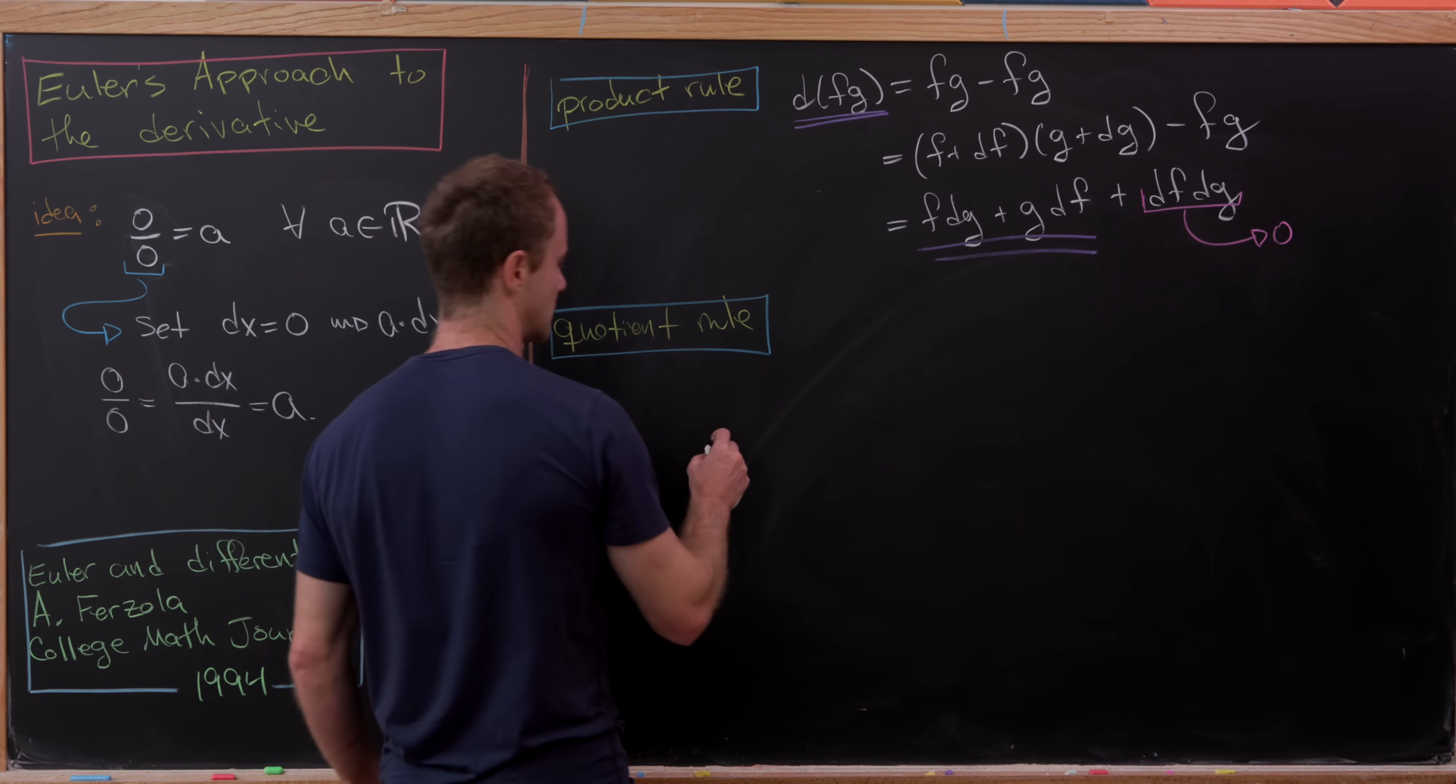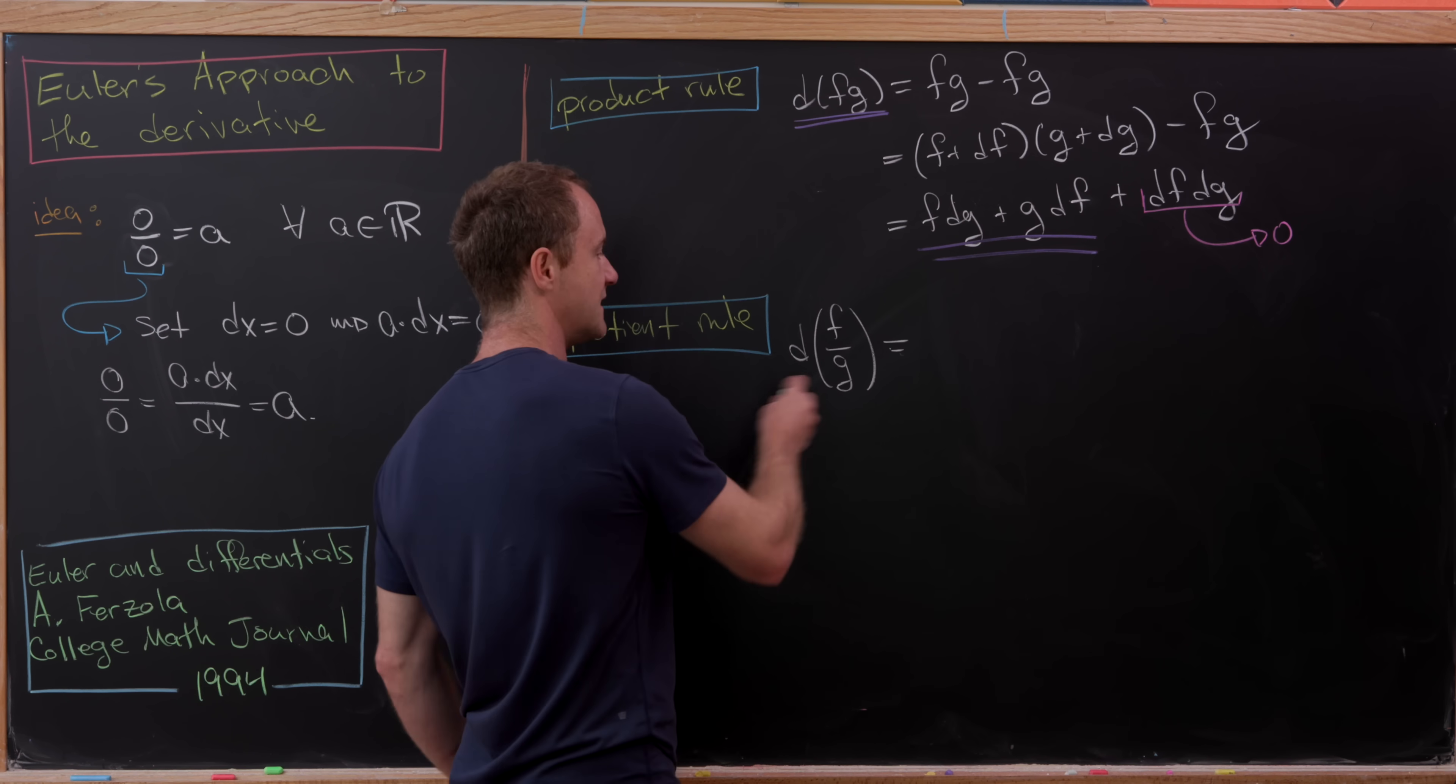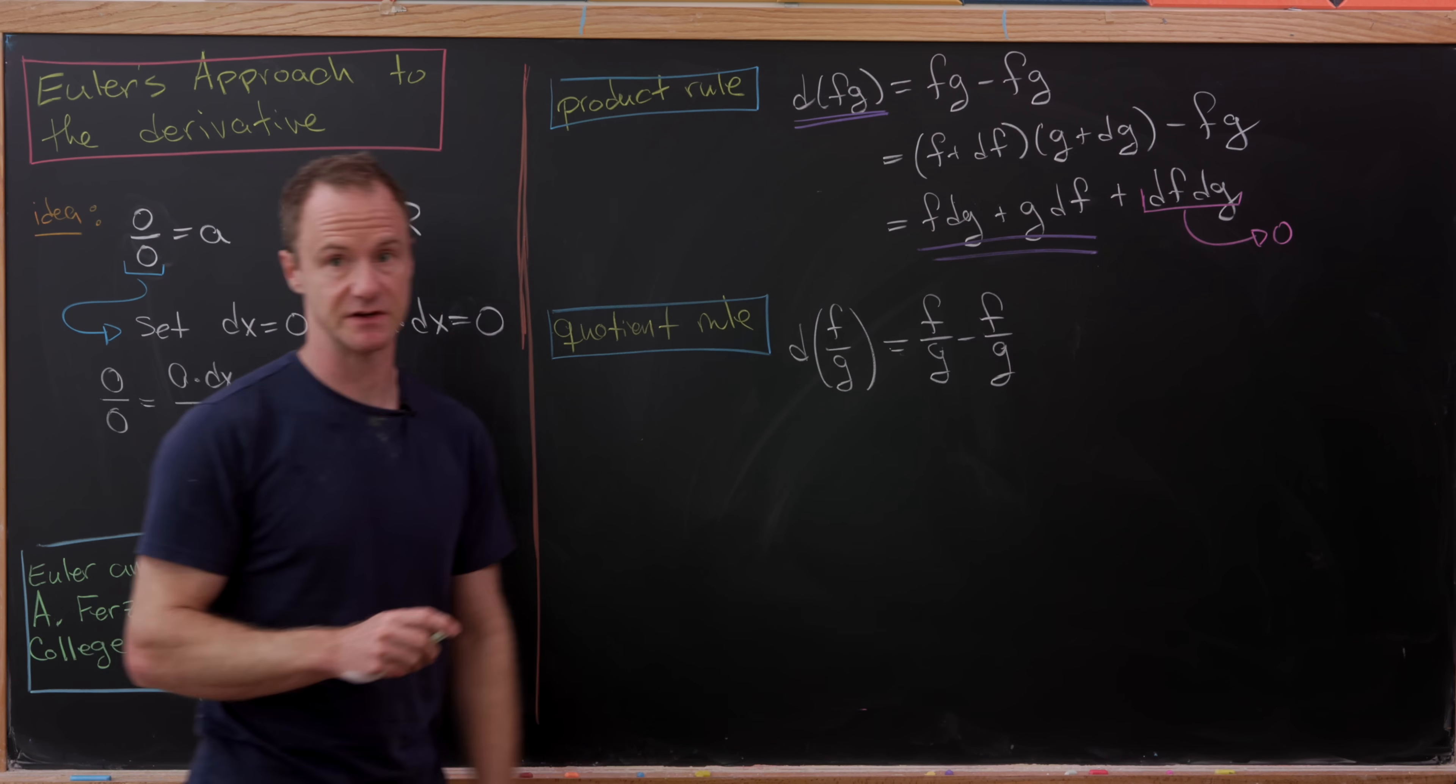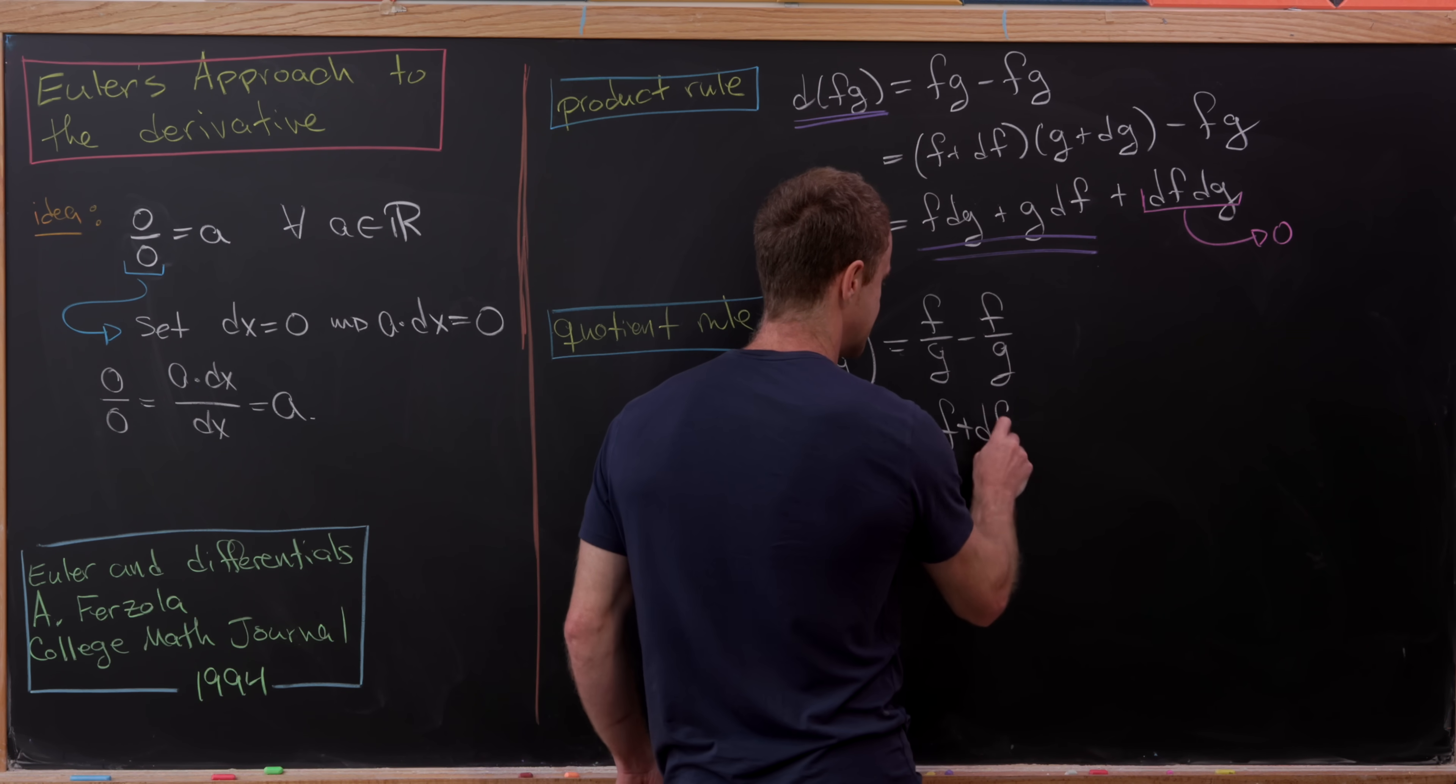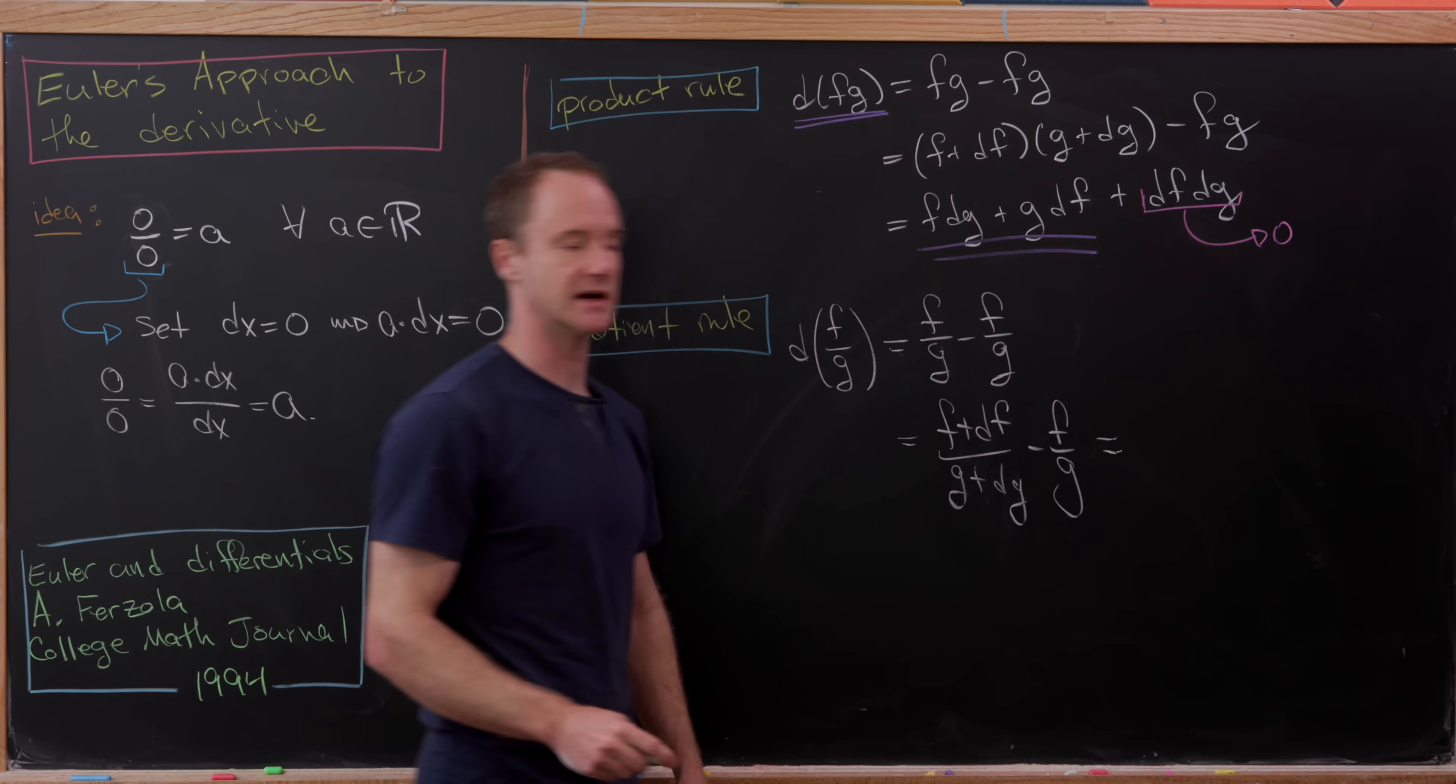So now let's look at the quotient rule. So let's do D of F over G. Well, again, this is a version of zero, but we'll write it as F over G minus F over G, that version of zero. And then we'll manipulate it again, and keeping in mind that we had this up here. So here we have F plus DF over G plus DG minus F over G.